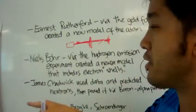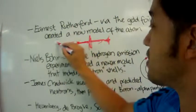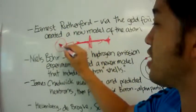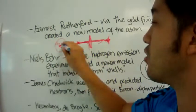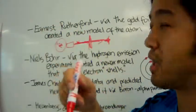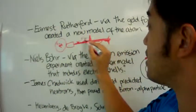And so he said that Thompson's model may not be true, because if an atom was a big, huge, positive sphere, then all the alpha particles should not go through there, but get deflected. So most of the alpha particles went through, but some of them got deflected.